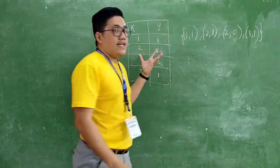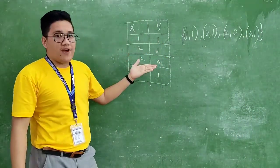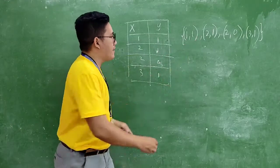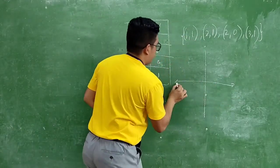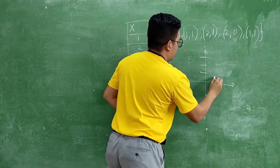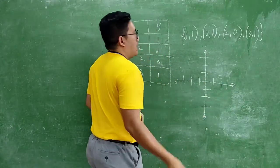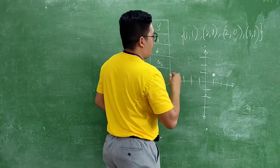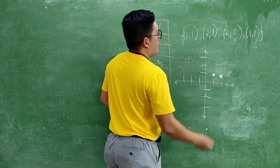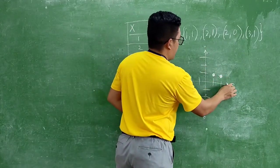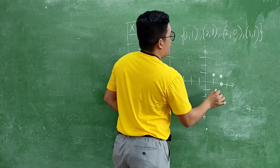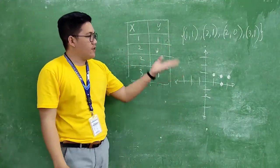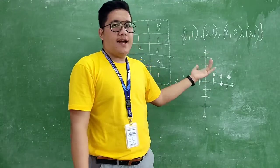We can transfer those values into a table of values, like what we used to do. Then we can also graph them. We have the points: (1,1), (2,1), (2,0), and (3,1). These are the points formed on the graph.